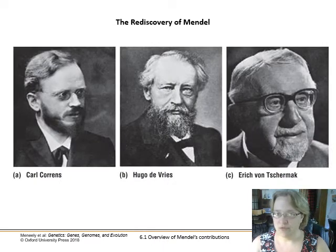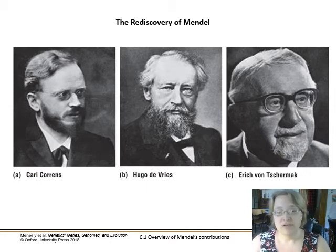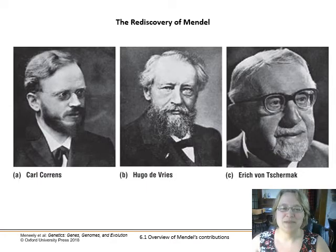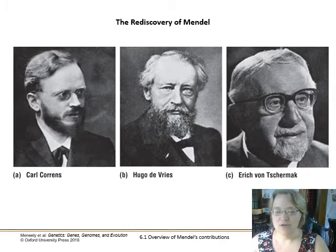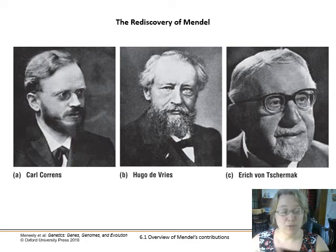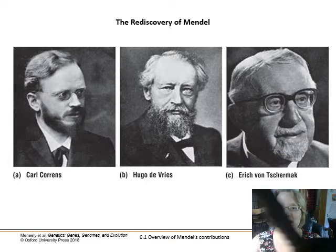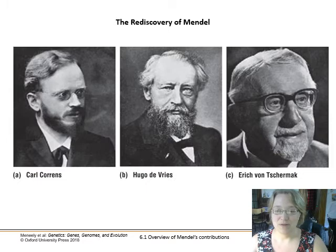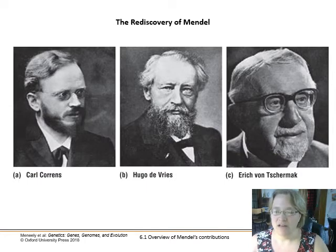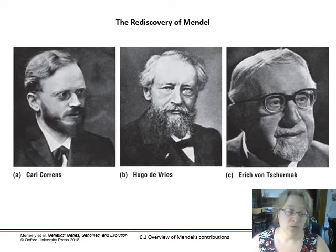There was a time gap between when Mendel did his experiments, published, and was then rediscovered around 1900 by geneticists and botanists including Carl Correns, Hugo de Vries, and Erich von Tschermak — all of whom attributed their findings to him, giving him credit for prior work. Hugo de Vries coined terms we still use in genetics, like gene, alleles, and mutation.